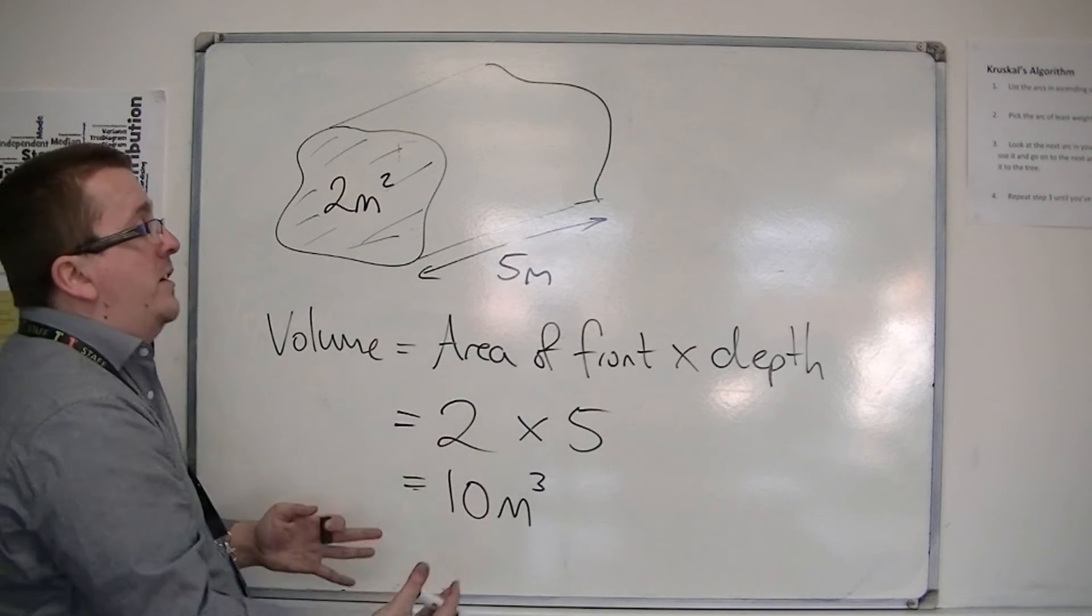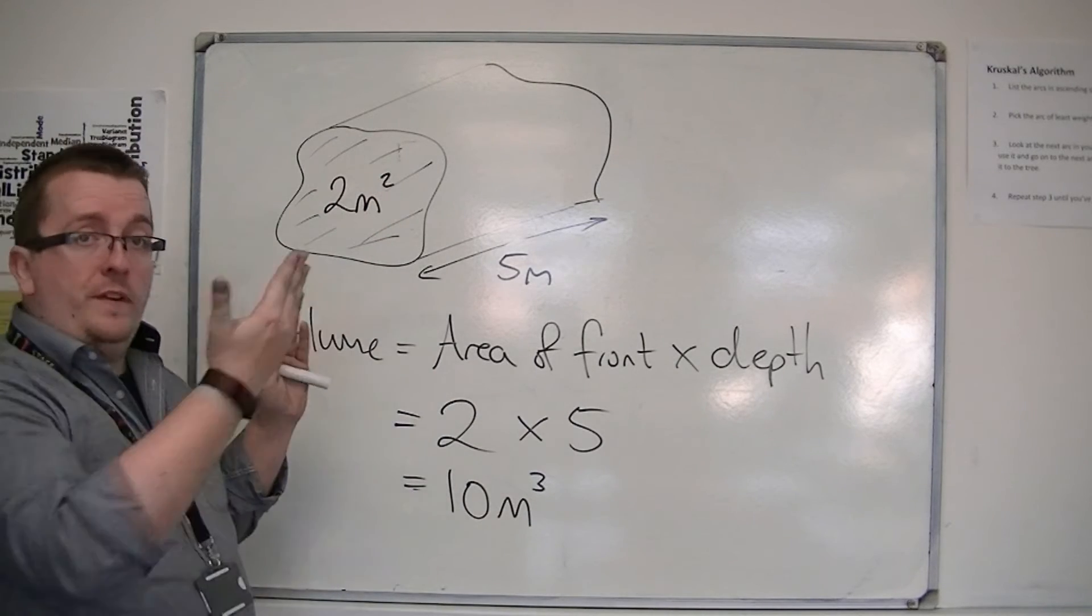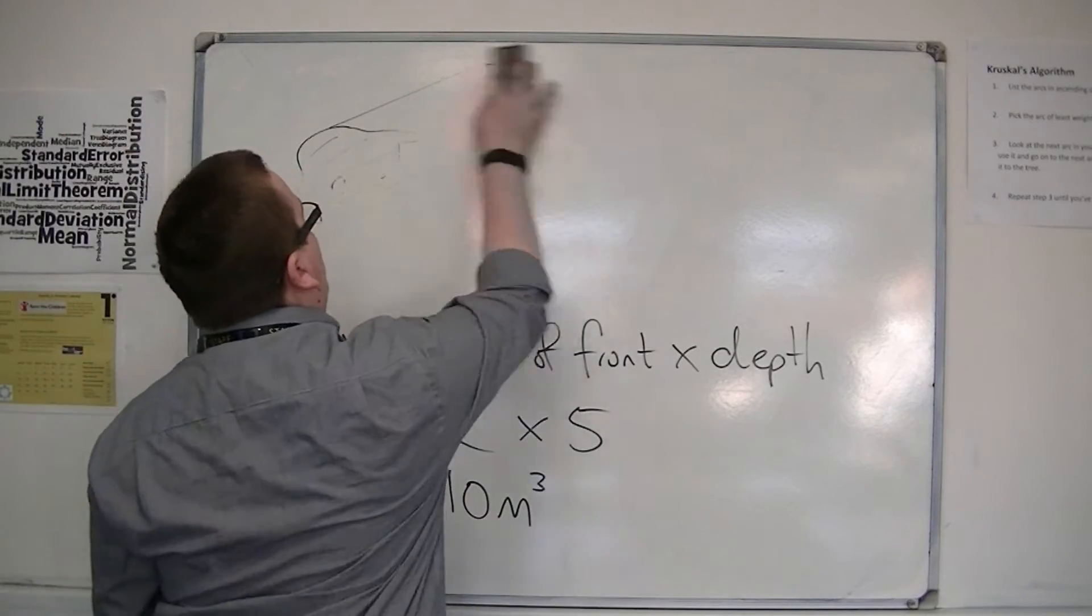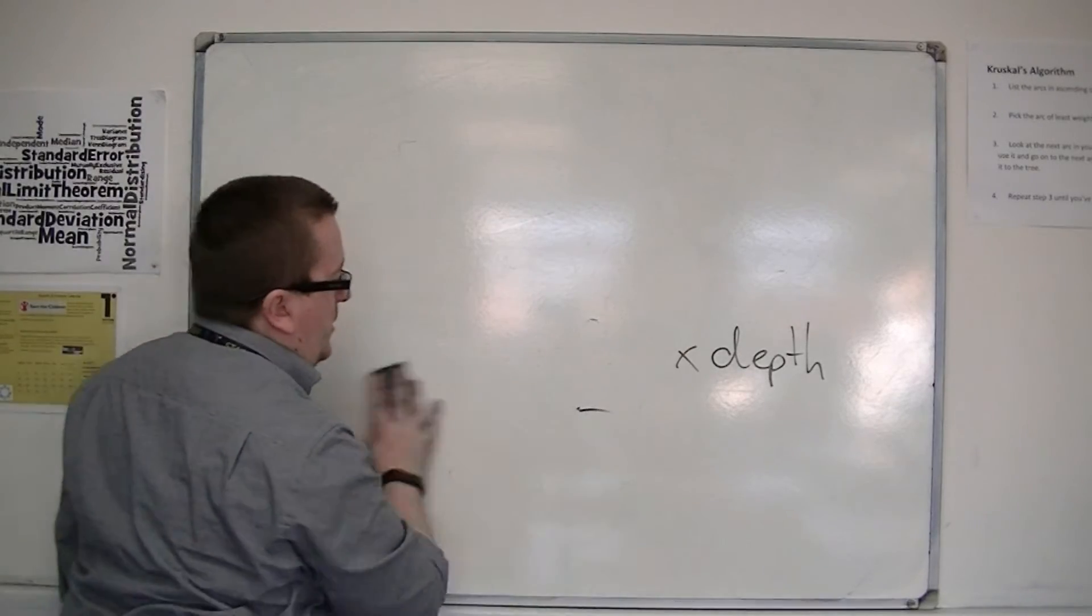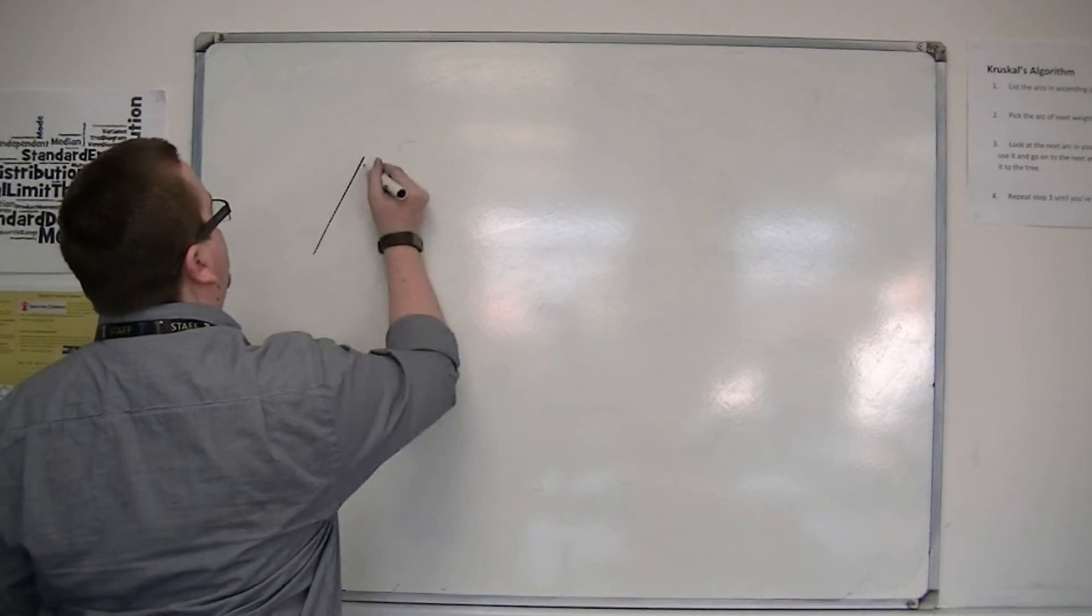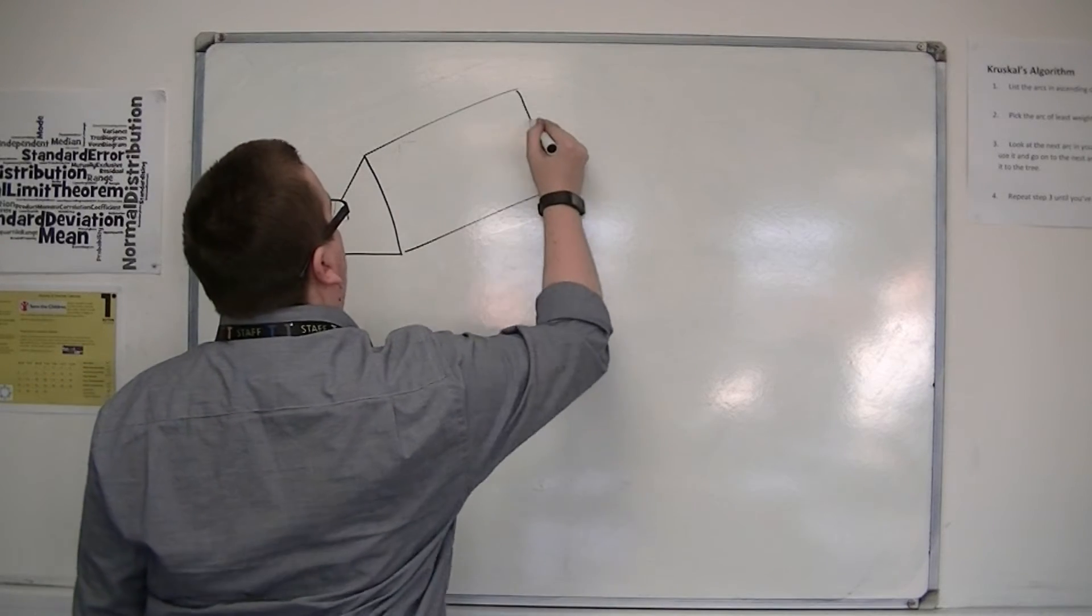So that is how we can find the volume of a shape knowing its front face area. That then means that we could also find the area of a triangular prism. If we have a triangular prism, like a Toblerone shape...